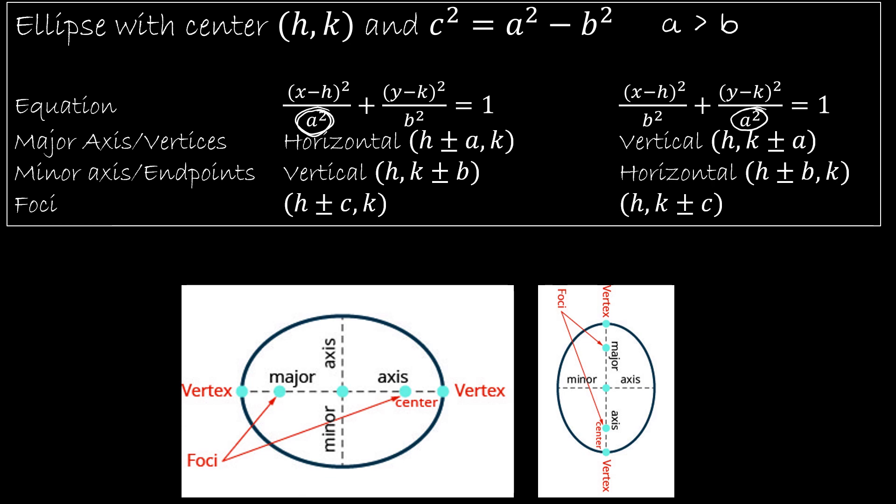And for my second, the larger value is below y. And so it's going to be vertical. The vertices are the endpoints of the ellipse, and that is found differently for whether it is a horizontal or vertical major axis. And then it's sort of just the opposite for the minor axis endpoints.